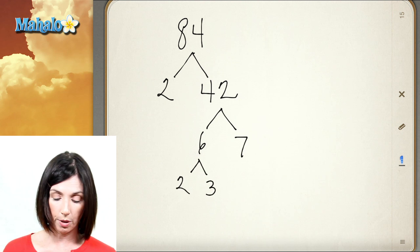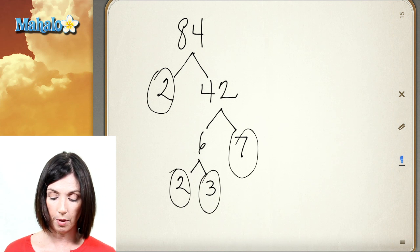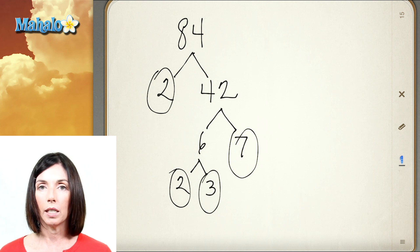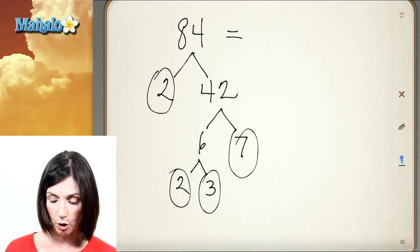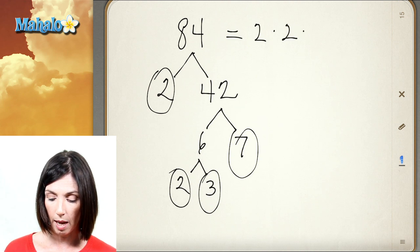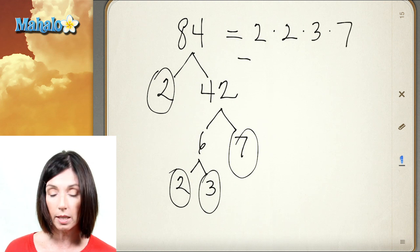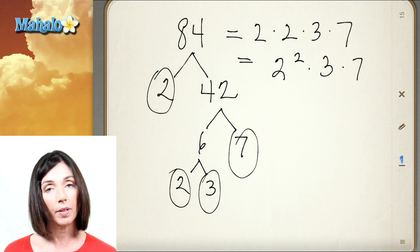So when I have prime numbers at the end of my tree branches here, they're all prime, those numbers, then I know I'm done. And the correct way to write it is from the smallest prime number to the largest prime number and to use exponents. So 84 is equal to 2 times 2 times 3 times 7, but the correct way to write that in this case would be 2 squared times 3 times 7.